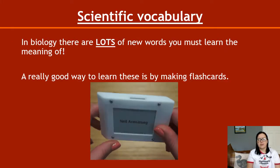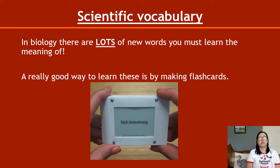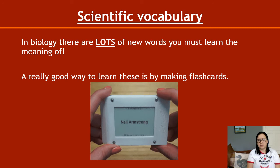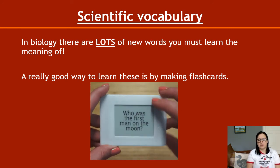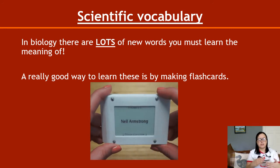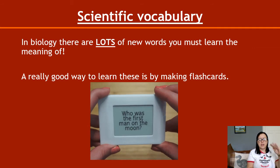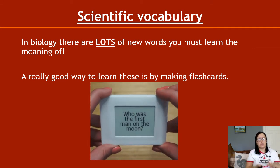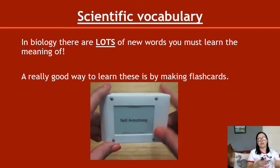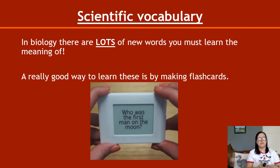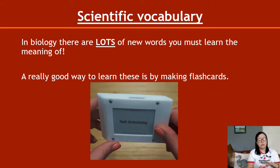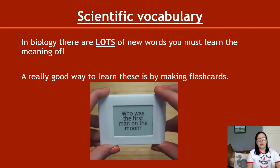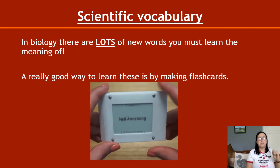For scientific vocabulary, there are so many new words you have to learn the meaning of. A really good way to learn this is by using flashcards — the word written on one side, the definition on the other. Get a stack of 20 or so and practise saying what's on the other side of the card without looking. If you get it right, move it to the correct pile. If you get it wrong, put it back on the bottom and go again. It's mindless, brain-numbing repetition, but it does work.